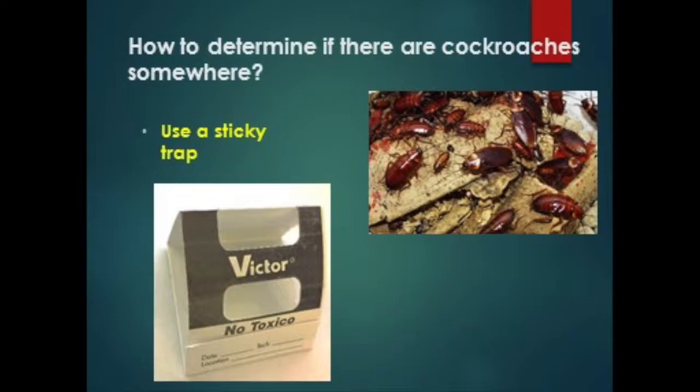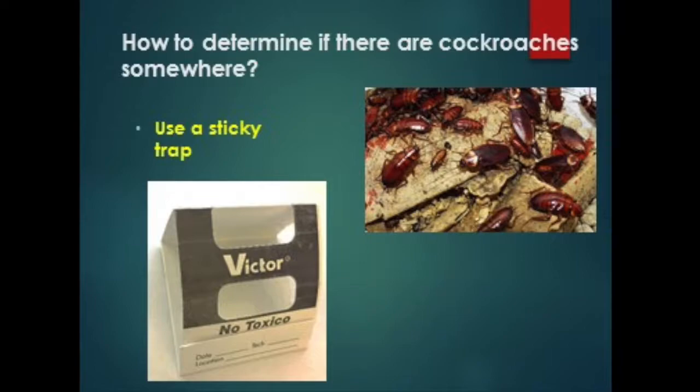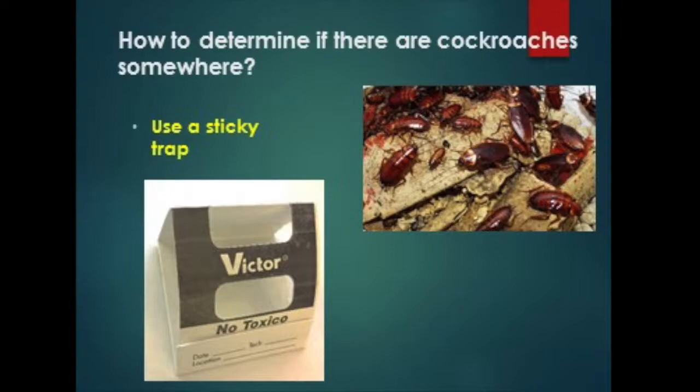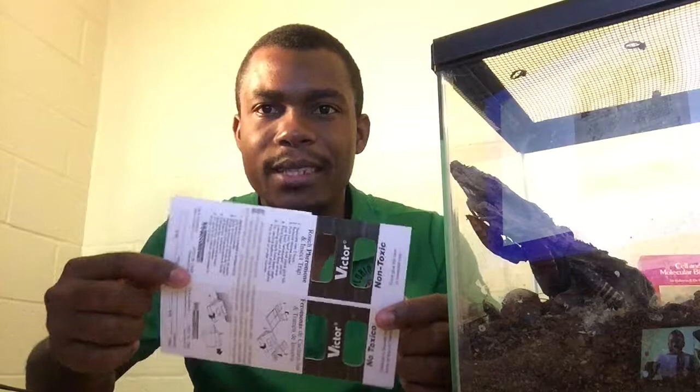To determine if there are cockroaches somewhere, it is very easy. You can use a sticky trap, for example. The sticky trap can be used for monitoring because it attracts cockroaches by means of chemical substances such as pheromones. I am going to show you how to set up a sticky trap.